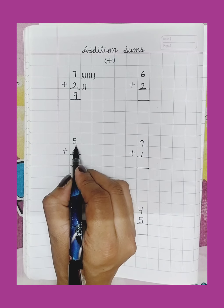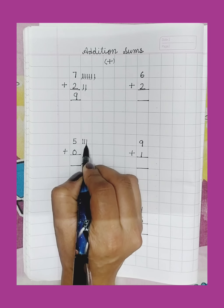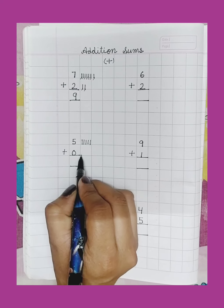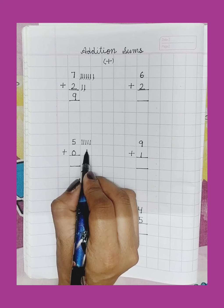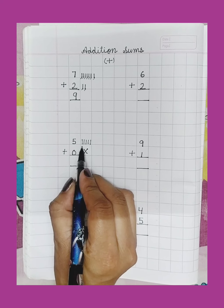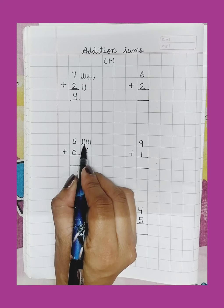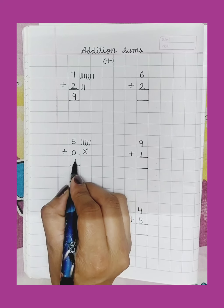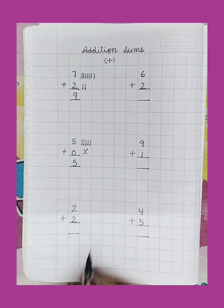Number 5. Draw 5 lines: 1, 2, 3, 4, 5. Here 0. Cross. Count the lines: 1, 2, 3, 4, 5. Write here 5.